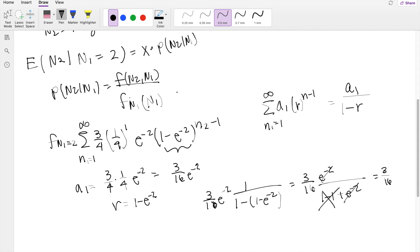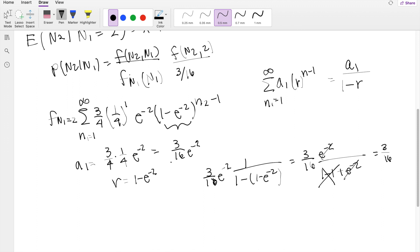Plugging that back into the denominator here, you're going to get 3 over 16, and it's going to be f of N2, and N1 is equal to 2, alright, so we know when N1 is equal to 2, we get this function here.